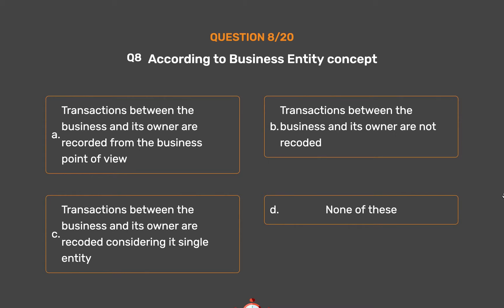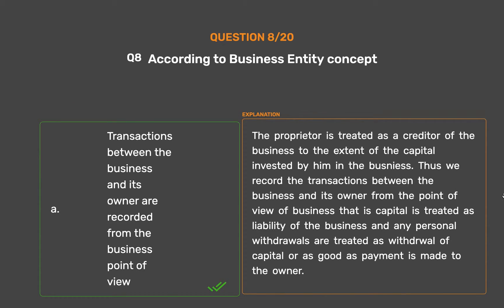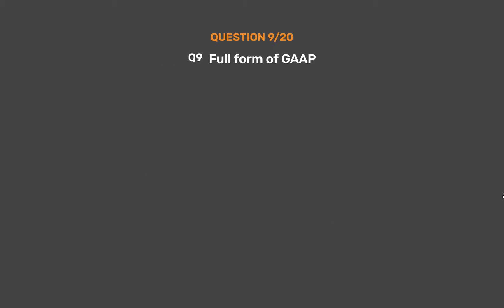The correct answer is Option A: Transactions between the business and its owner are recorded from the business point of view. The proprietor is treated as a creditor of the business to the extent of the capital invested by him. Thus we record transactions between the business and its owner from the point of view of the business — capital is treated as a liability, and personal withdrawals are treated as withdrawal of capital.